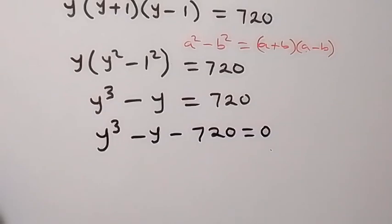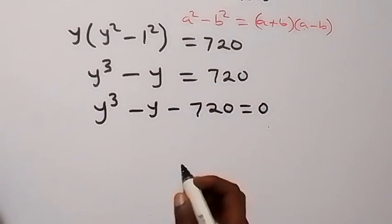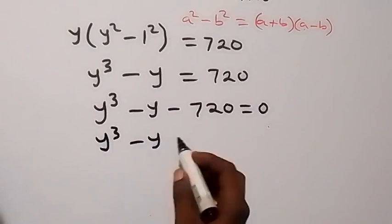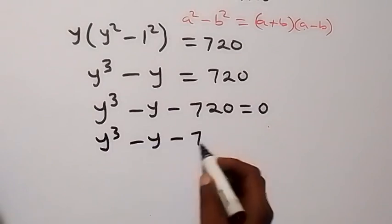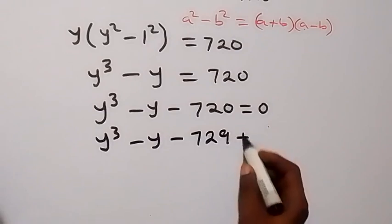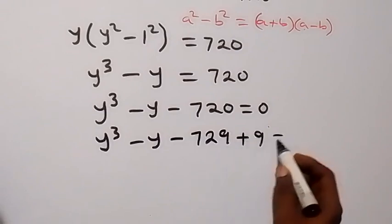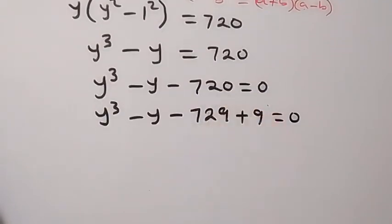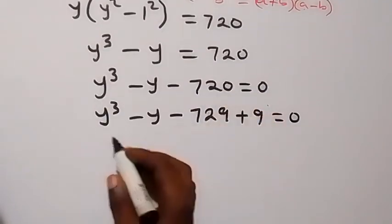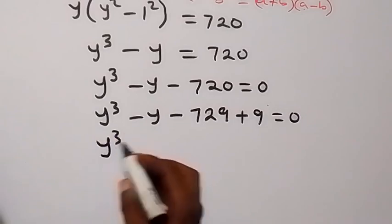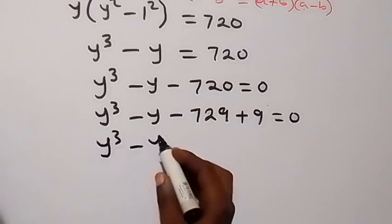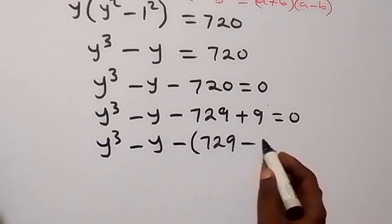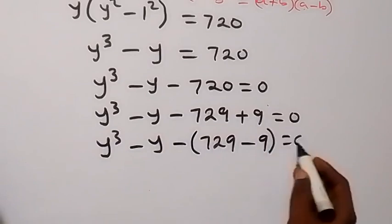We can rewrite -720 as -729 + 9, so we have y³ - y - 729 + 9 equals 0. We then factor out the minus, writing it as y³ - y - (729 - 9) equals 0.